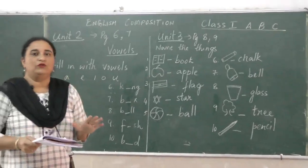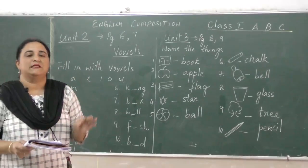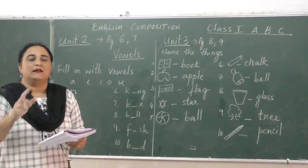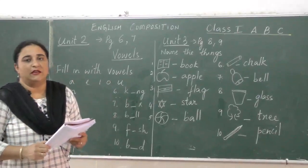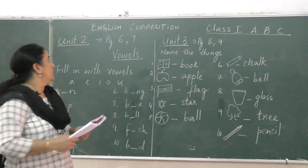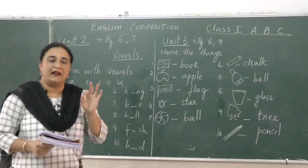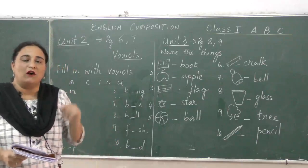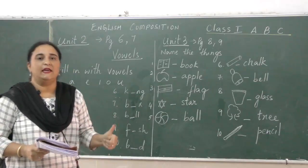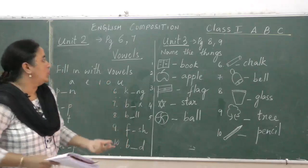I have told you that there are 26 alphabets, A to Z if we count. There are 26 alphabets in the English language. Now out of the 26, 5 alphabets are called vowels: A, E, I, O, U.